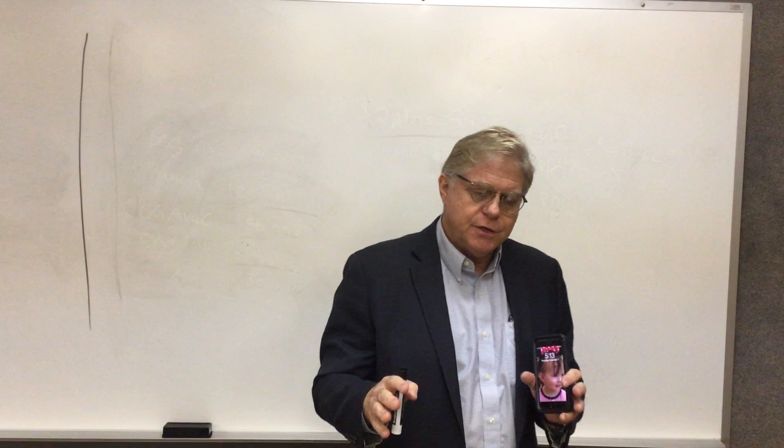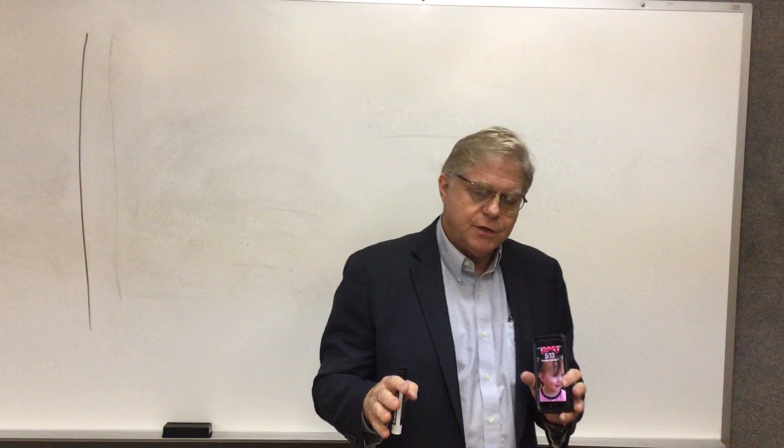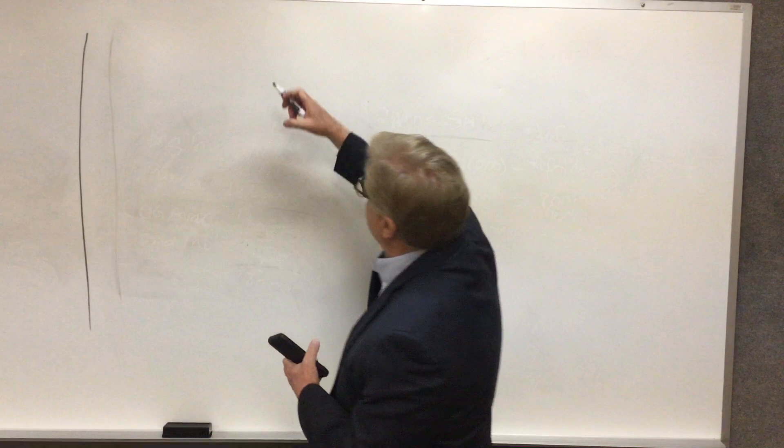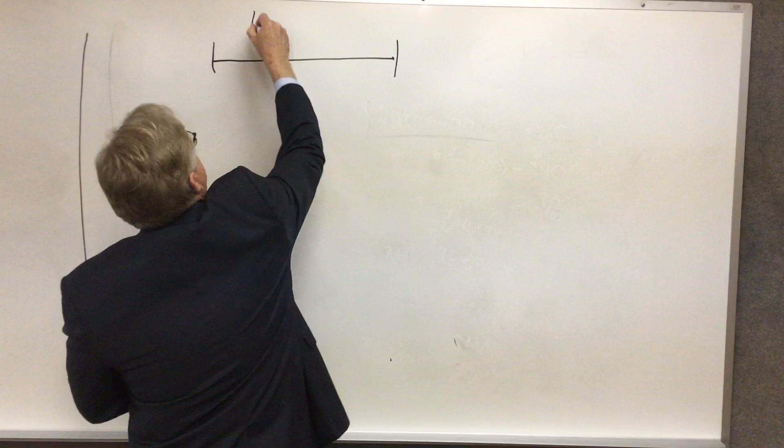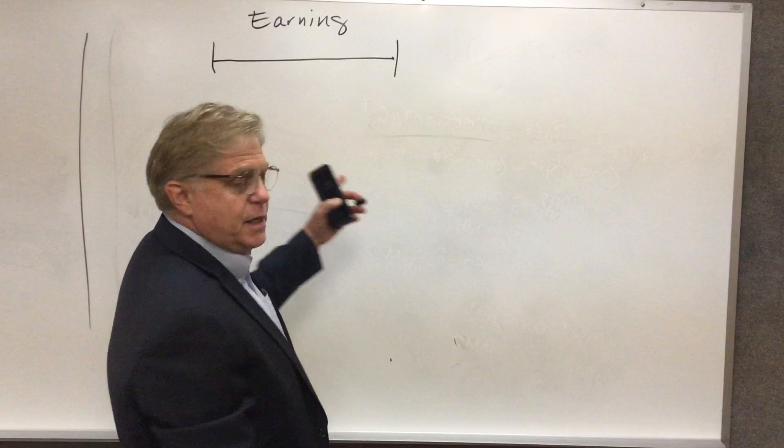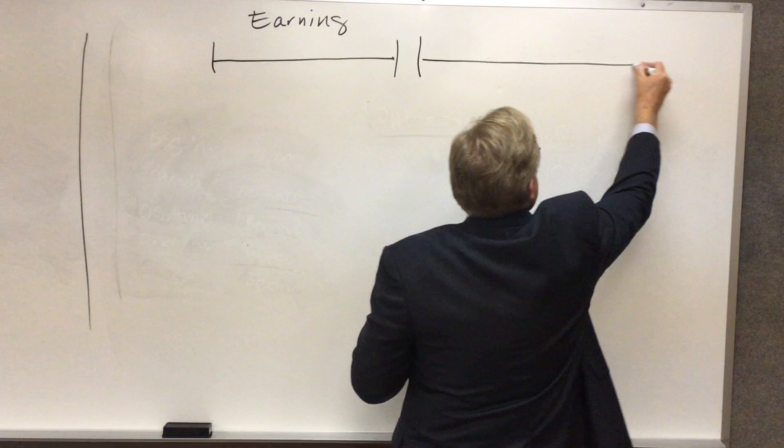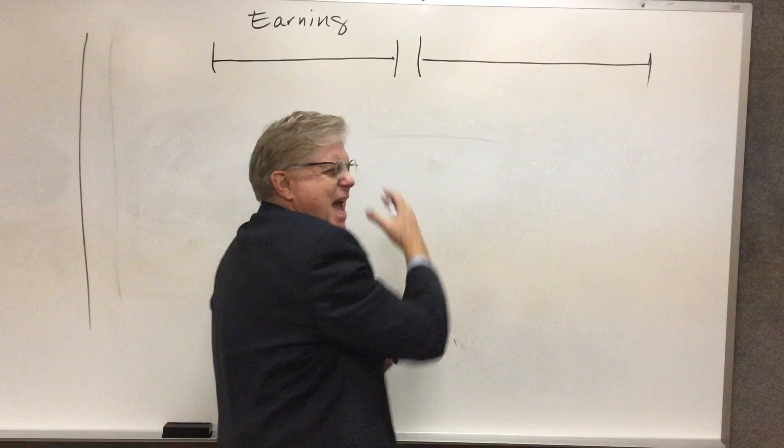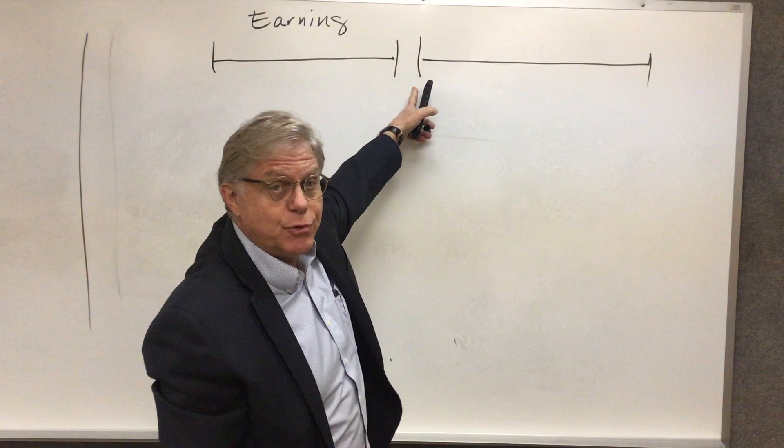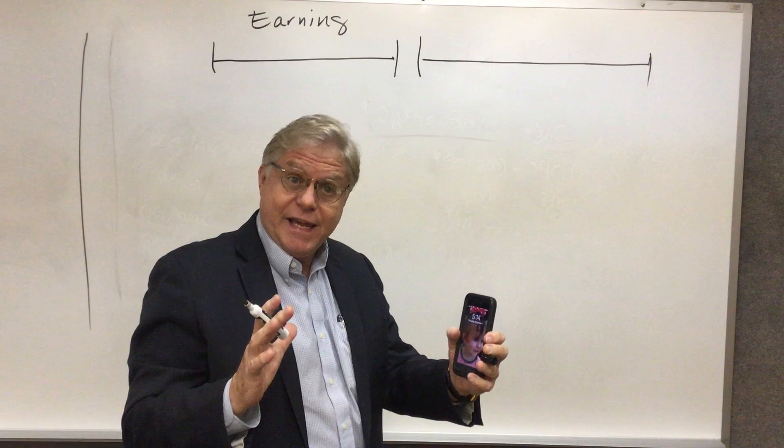One thing you want to note is when we're dealing with retirement problems, there are two main periods. There's something that's happening in the earning years - she's going to be making deposits into her retirement account. And then at retirement, she's going to be withdrawing from that fund. Now, I'm showing this as a gap, but in reality, these are the same day. This is the day that she retires. This is the day she begins retirement. But I like to separate those a little bit just to emphasize that they're really two related but separate parts of the problem. So let's label this retirement.